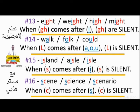Number fifteen: island — don't say 'island' with the S; isle — don't say 'isle' with the S. S is silent because it comes after I. Rule sixteen: scene, science, scenario — many people don't think that C is silent because we say 'scene', 'scenario', 'science', but in fact the C is silent because it comes after the letter S, and S is stronger.